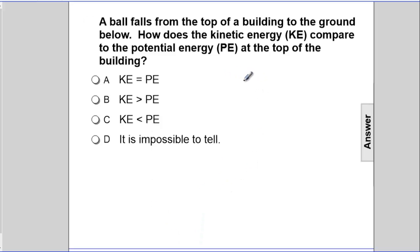A ball falls from the top of the building to the ground. How does the kinetic energy, KE, compare to the potential energy, PE, at the top of the building?